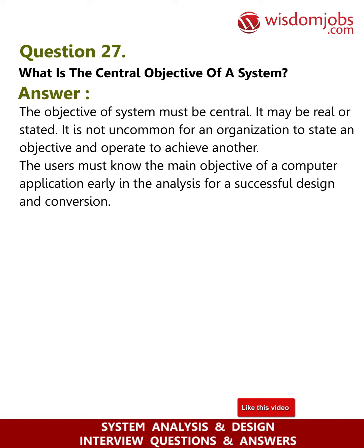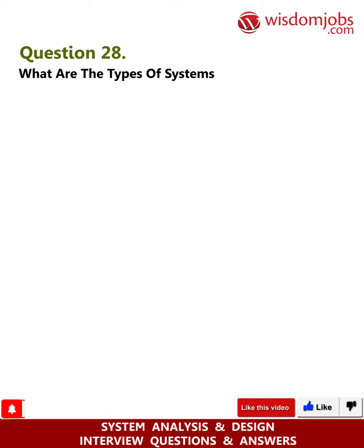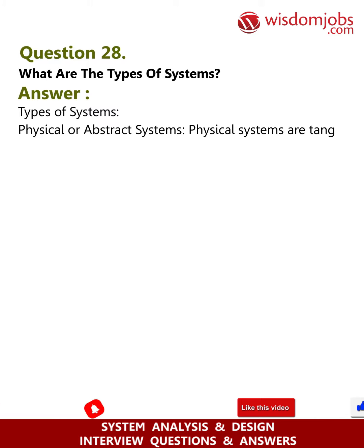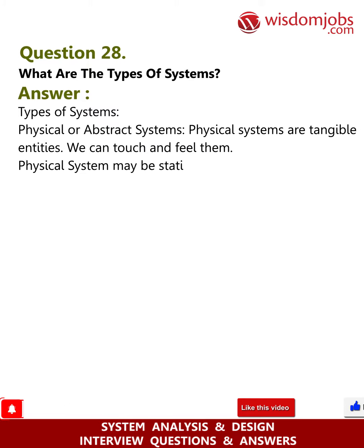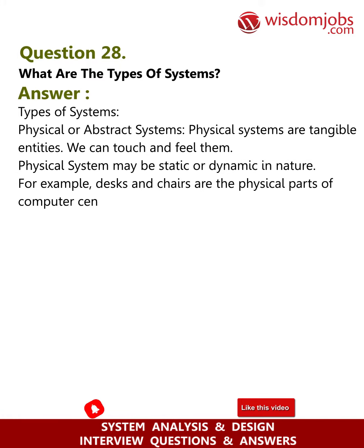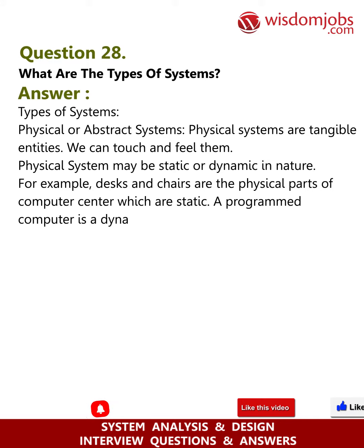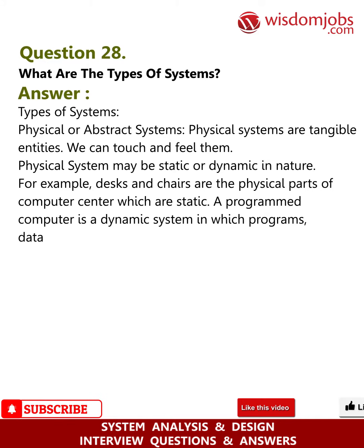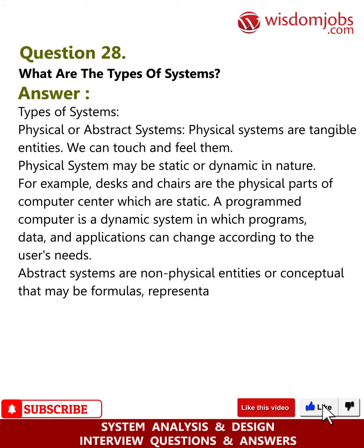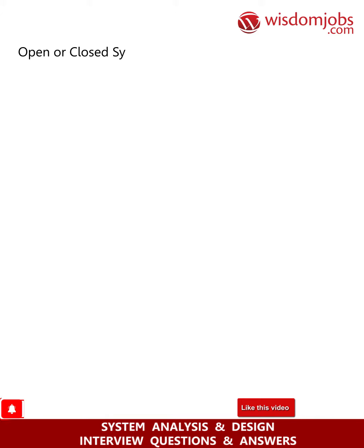Question 28: What are the types of systems? Answer: Physical or abstract systems. Physical systems are tangible entities we can touch and feel. A physical system may be static or dynamic in nature. For example, desks and chairs are the physical parts of a computer center, which are static. A programmed computer is a dynamic system. Abstract systems are non-physical or conceptual entities that may be formulas, representations, or models of a real system.